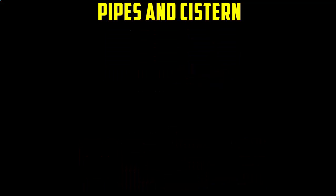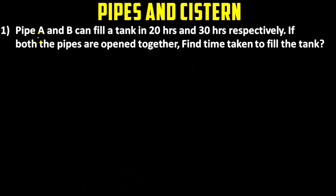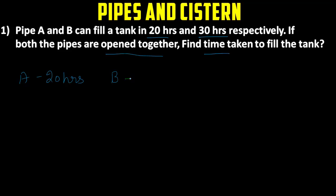Let's start. The first question is: pipe A and pipe B can fill a tank in 20 hours and 30 hours respectively. If both the pipes are opened together, then find the time taken to fill the tank. In this question, A takes 20 hours to fill the tank and B takes 30 hours to fill the tank.